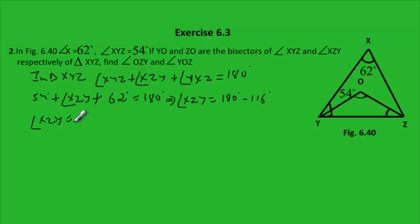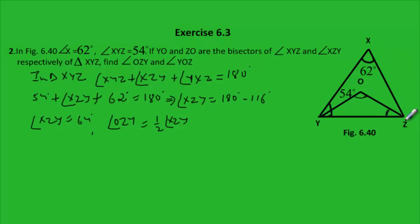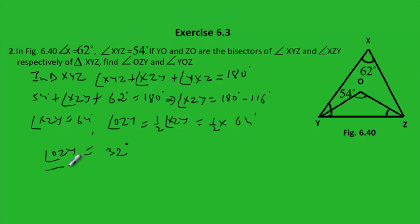Now angle OZY: since ZO is the angle bisector of angle XZY, angle OZY is equal to one half of angle XZY. We found angle XZY is equal to 64 degrees, so angle OZY is equal to 32 degrees. That is the first angle we needed to find.